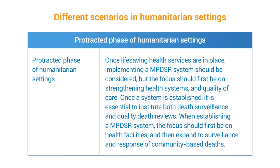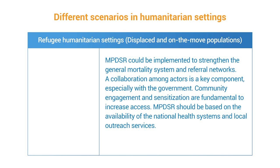In longer duration settings — more than six months — that is the protracted phase of humanitarian settings, once life-saving health services are in place, implementing a health MPDSR system should be considered. The focus should first be on extending health systems and quality of care. Once a system is established, it is essential to institute both death surveillance and quality death reviews. When an MPDSR system is established, the focus should first be on health facilities, then expand to surveillance and response of community-based deaths, specifically in refugee humanitarian settings.